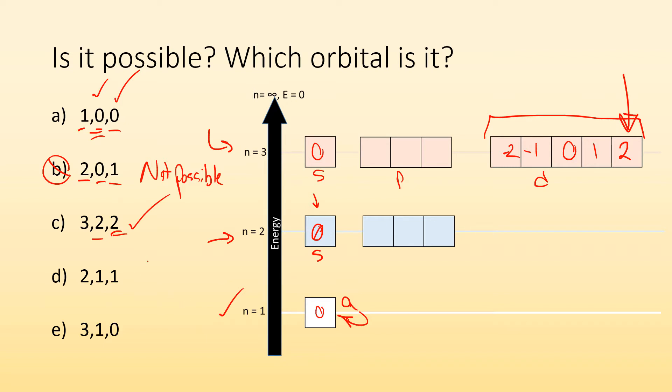All right, two comma one comma one. Let's see again, second energy level. Number one sublevel, which is the P sublevel. All right, cool. And box number one. Is there a box number one? Well, let's see. This would be zero. That'd be minus one. This would be positive one. Yep. It's talking about this orbital right there.